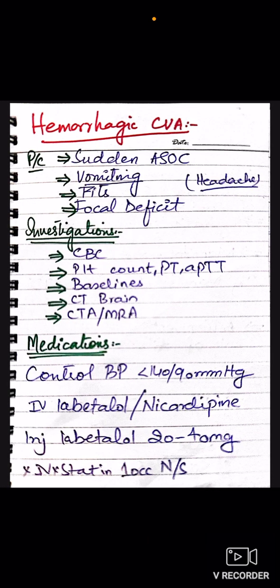Now for hemorrhagic CVA: in this case, the blood vessel is broken, blood fills the brain area, and that area is compromised. Symptoms include sudden altered state of consciousness, vomiting, headache, fits, and focal deficits. Investigations are the same baselines: CBC, platelet count, APTT, PT/PTT, LFT, RFT, urine complete examination, hepatitis viral markers, CT brain, CT or MRI angiography.